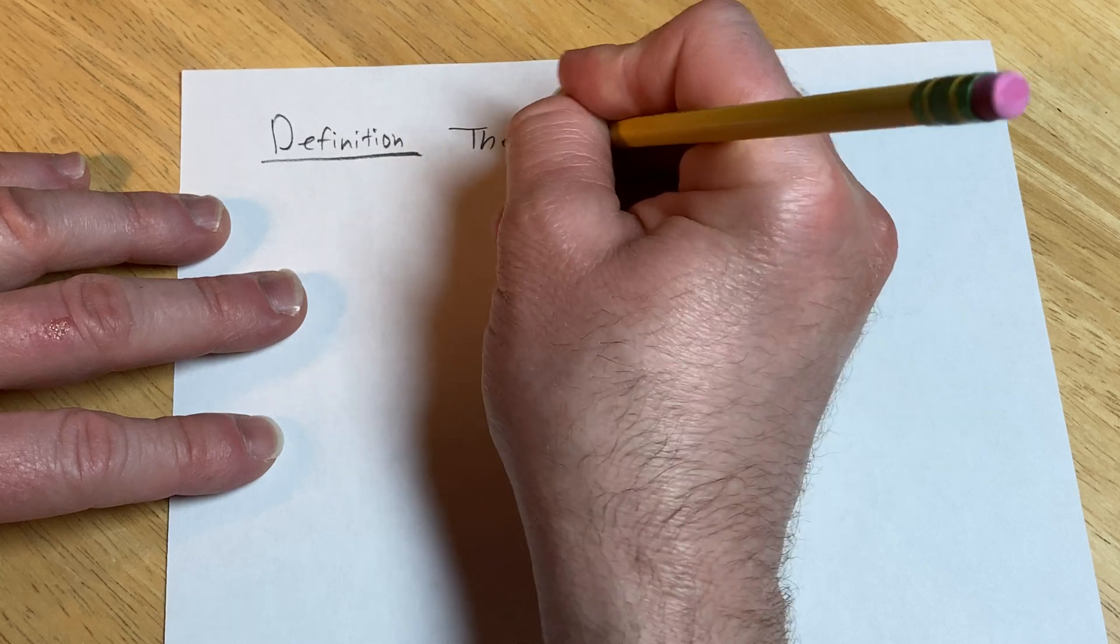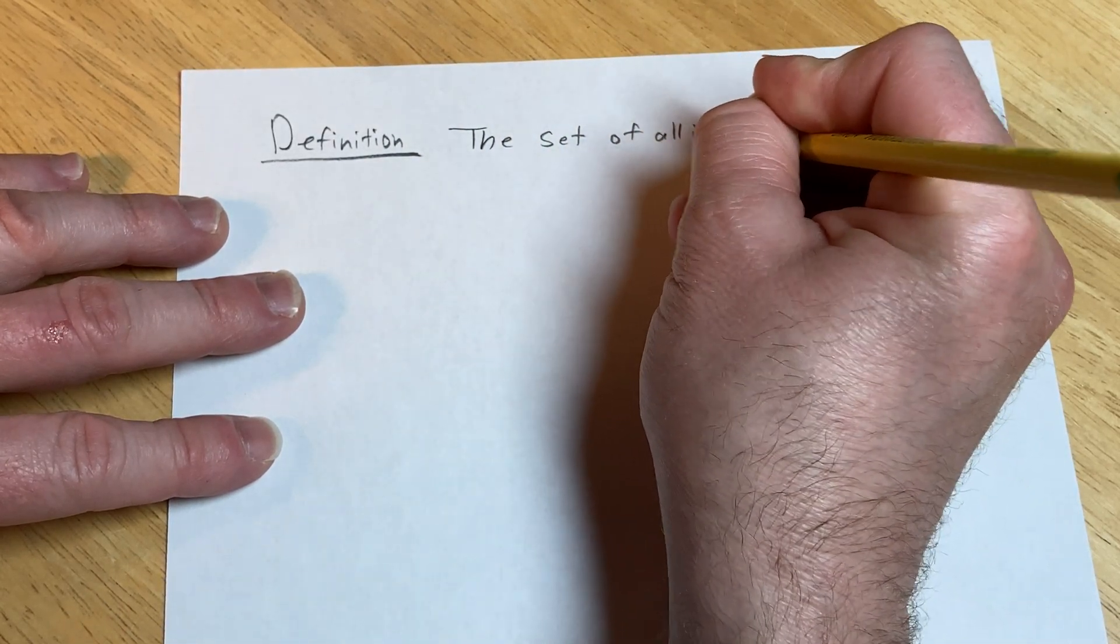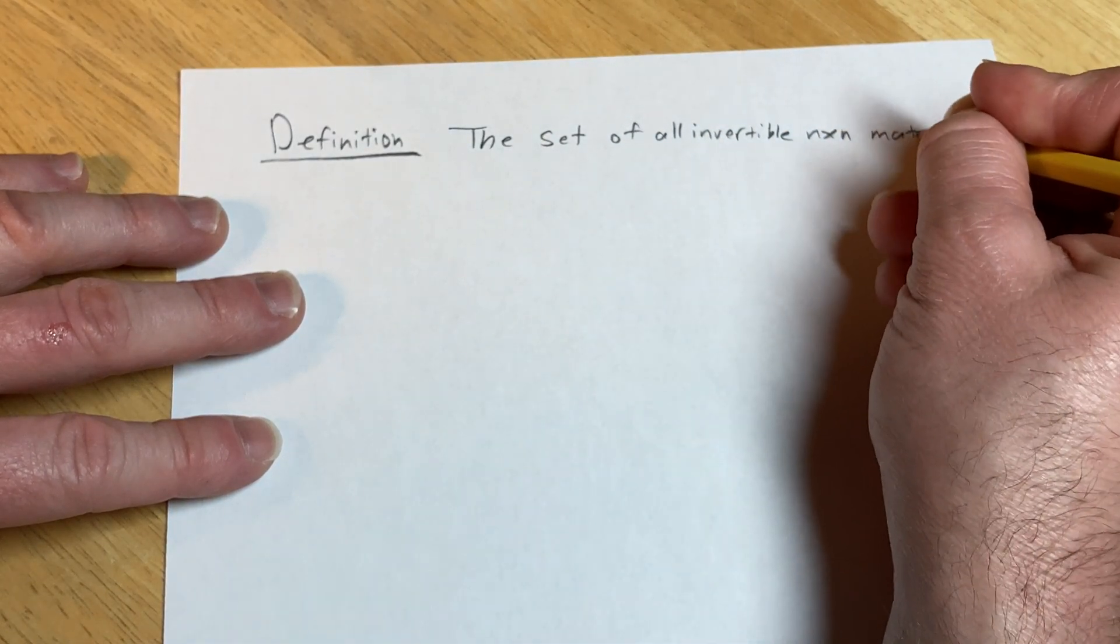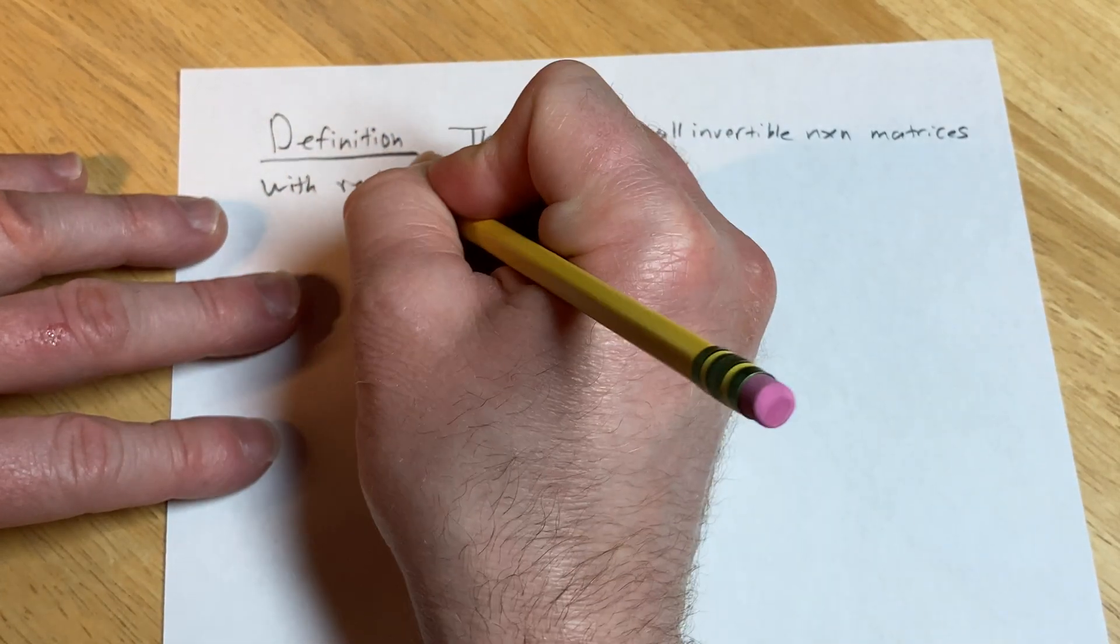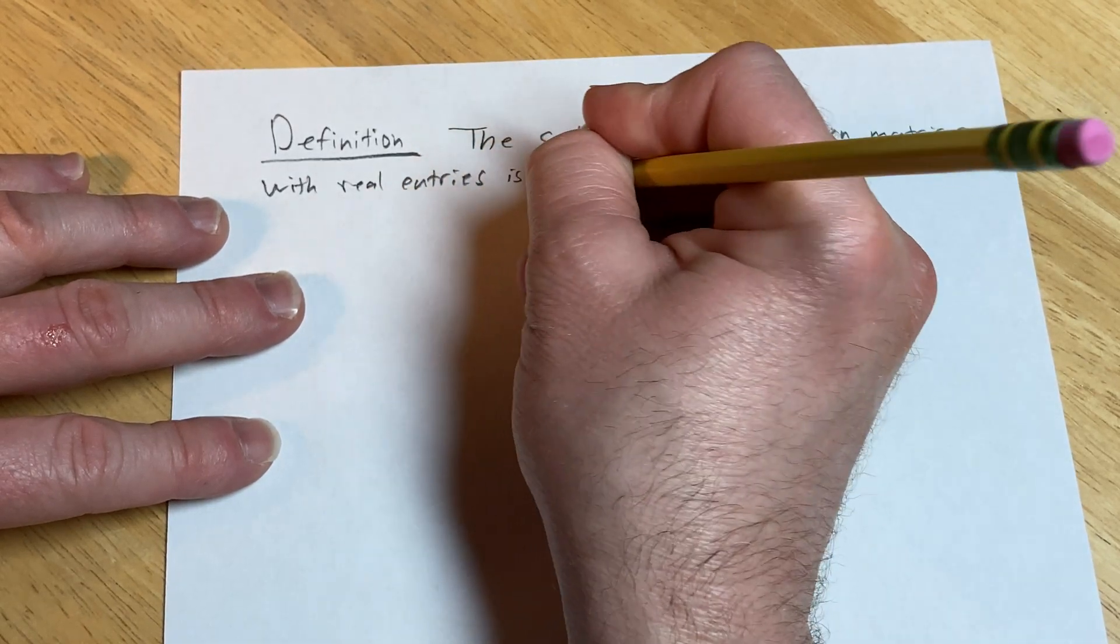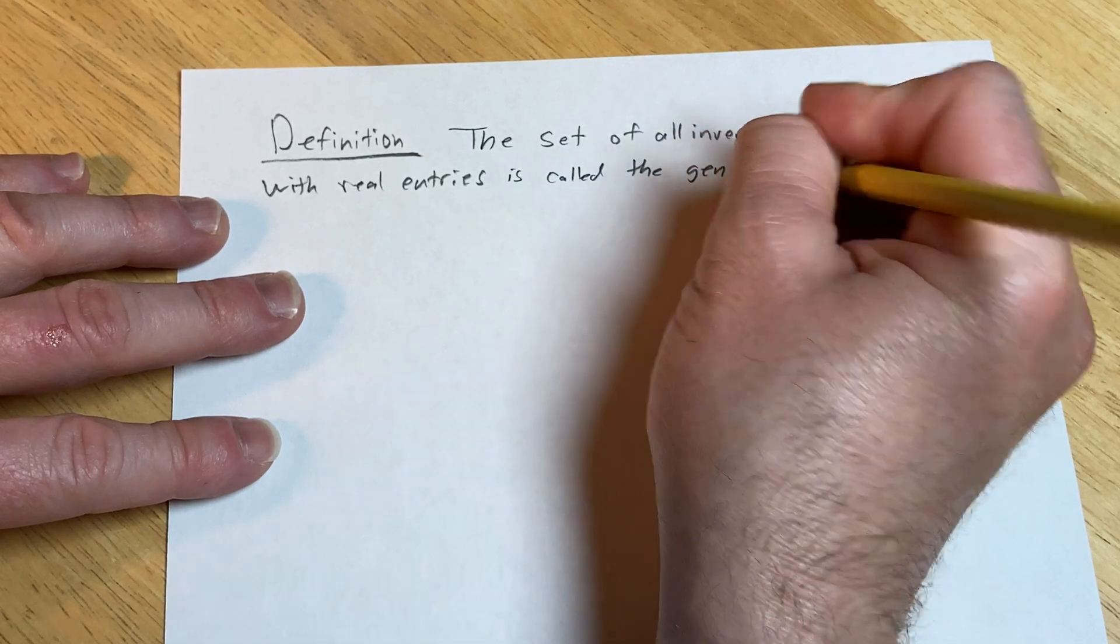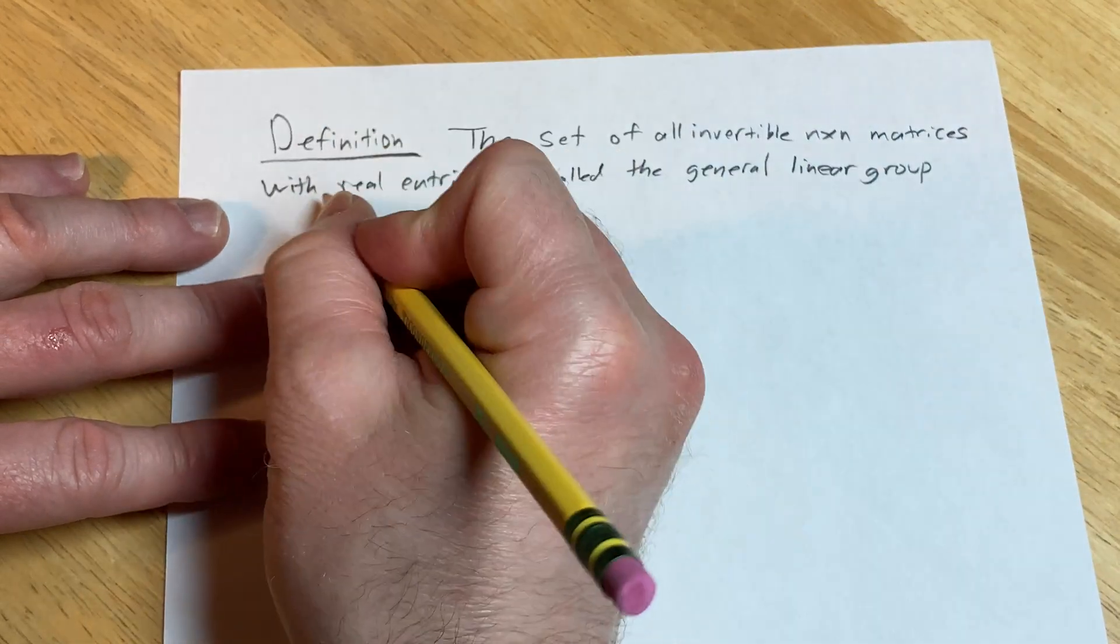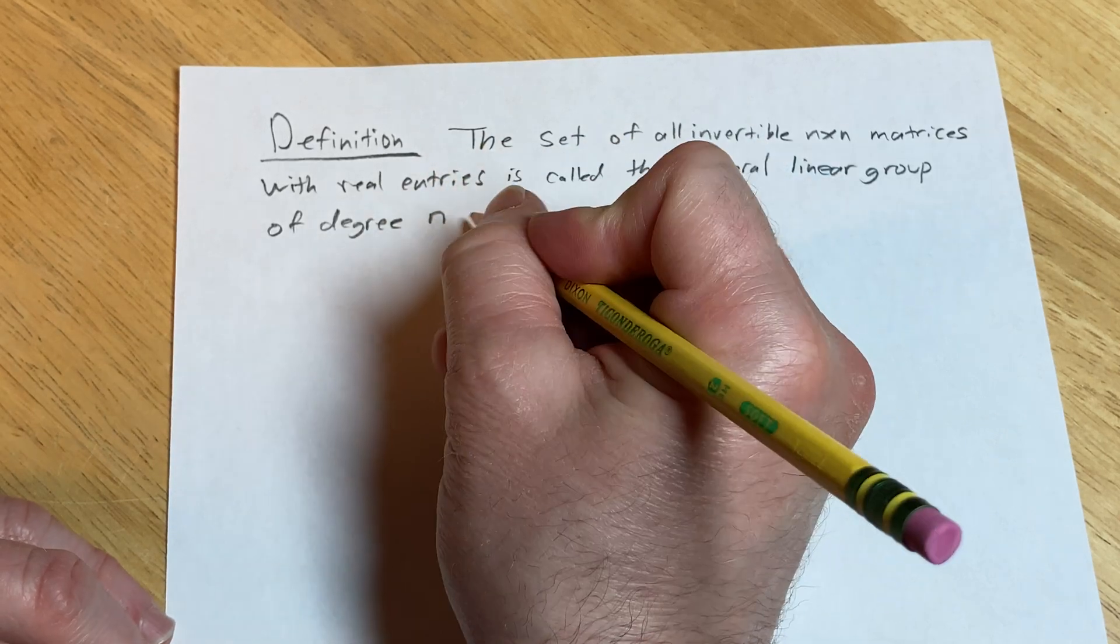The set of all invertible n by n matrices with real entries is called the general linear group of degree n over the real numbers.